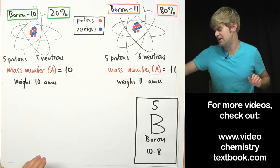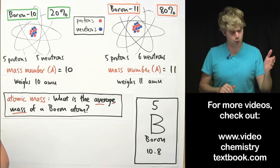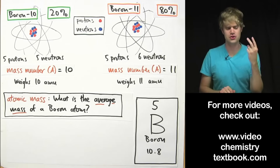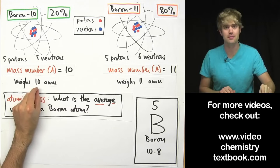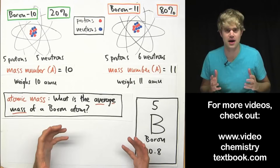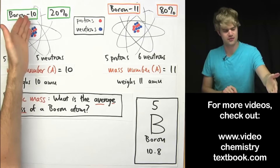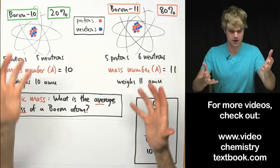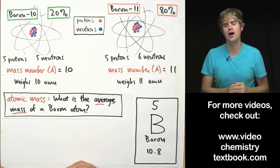This leads us to the idea of atomic mass. Atomic mass asks: what is the average mass of a boron atom? We've got boron-10 that weighs ten AMU and boron-11 that weighs eleven AMU. But there's only twenty percent of boron-10 and eighty percent of boron-11. So we're asking: given these two types of boron, what is the average mass of a boron atom?